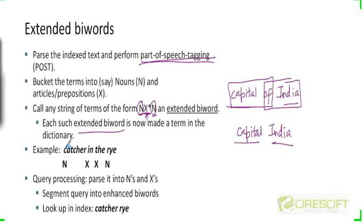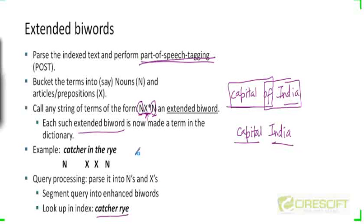So if you process a phrase like 'catcher in the rye,' you are going to index 'catcher rye' in your biword index. You will do the same thing for the query as well — the operations that you perform on the documents have to be exactly repeated on the query.